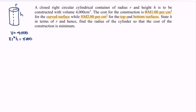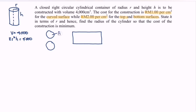The cylindrical container has two circles — the top and the bottom — and a rectangular body. The area of each circle is πr². For the curved surface, the circumference is 2πr and the height is h, so the curved surface area is 2πrh.